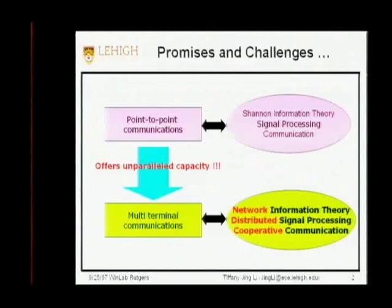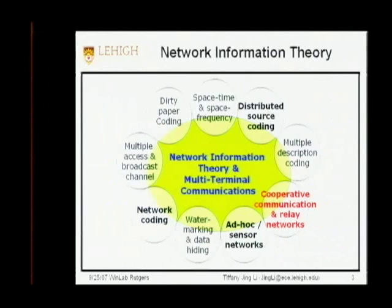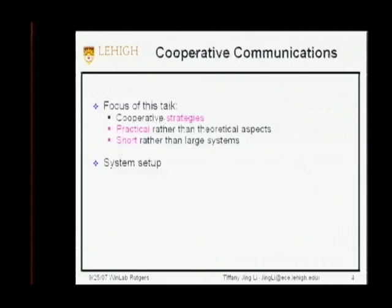We know that the communication infrastructure is undergoing a quiet paradigm shift from point-to-point to networked communication — basically from a single sender, single receiver, to multiple senders, multiple receivers, and possibly multiple relays in the middle. What we need instead of classic Shannon information theory is network information theory, distributed signal processing technologies, and cooperative communication ideas. My talk will focus on distributed source coding and cooperative communication in relay networks.